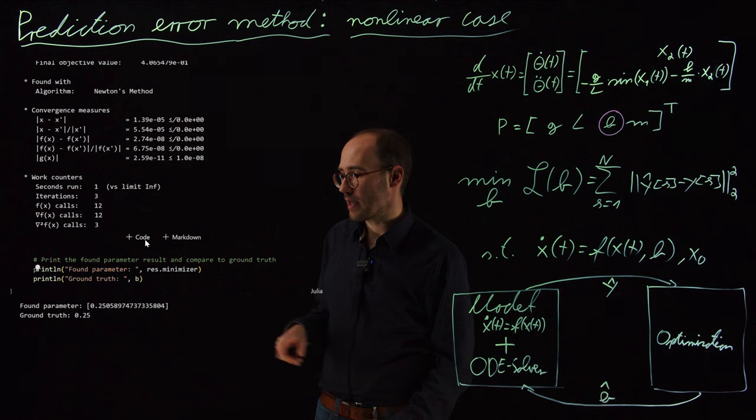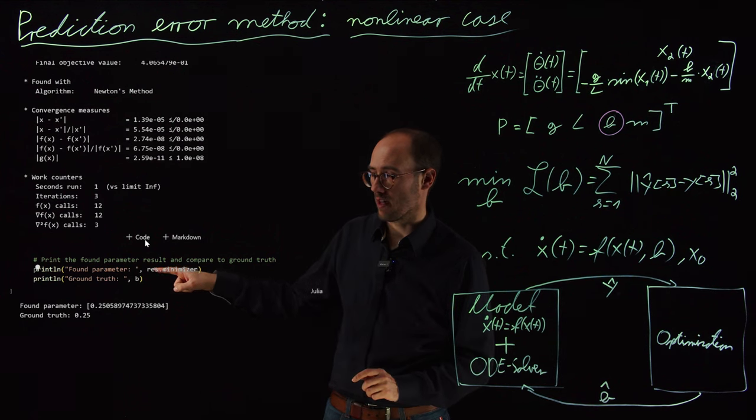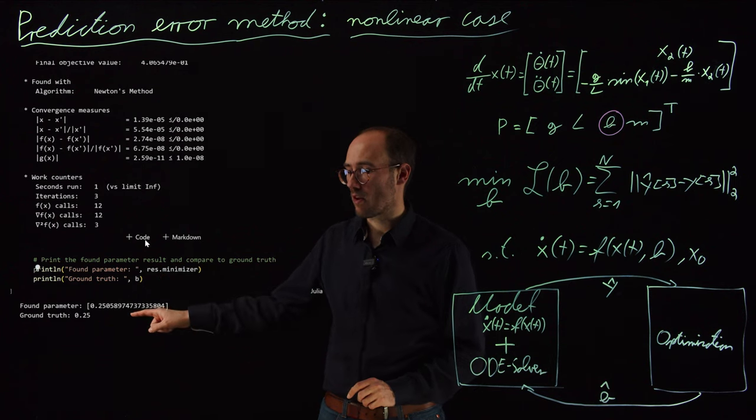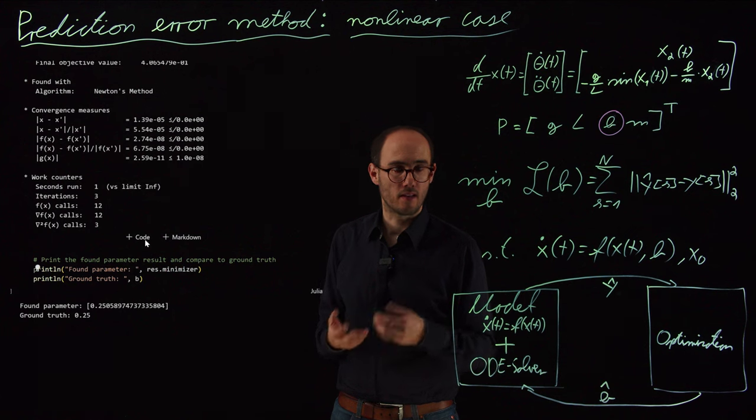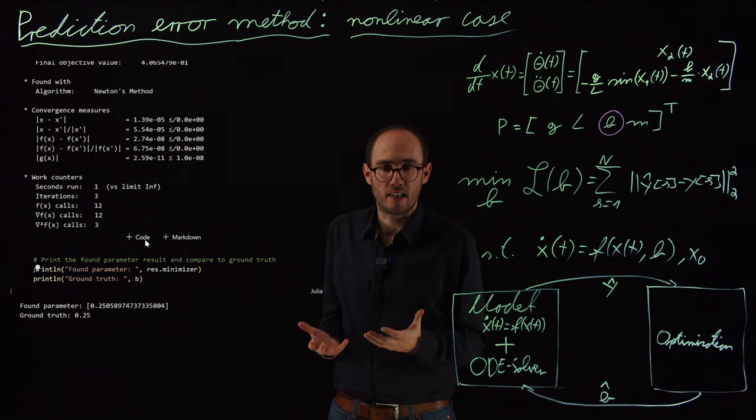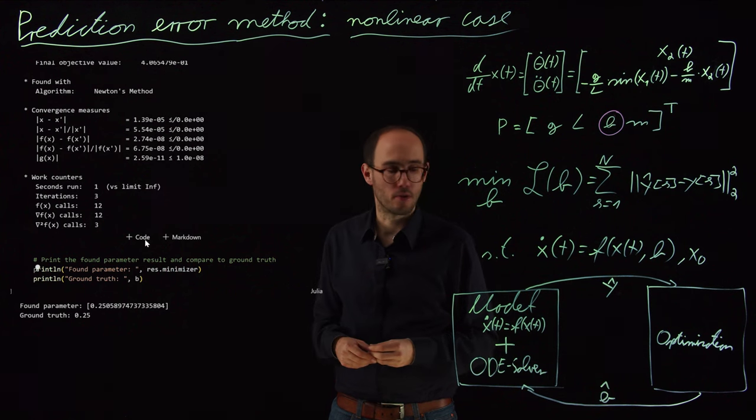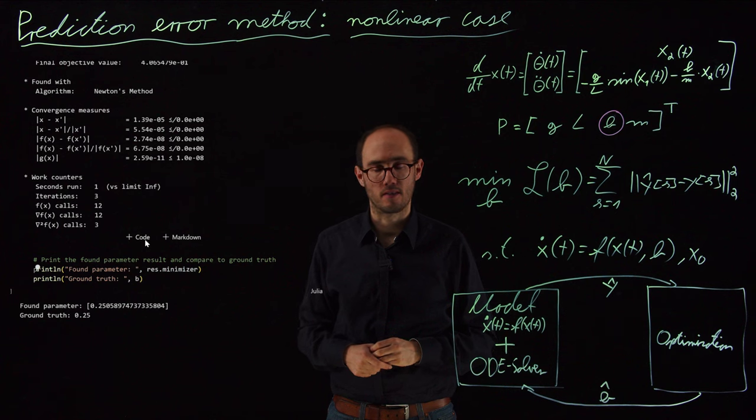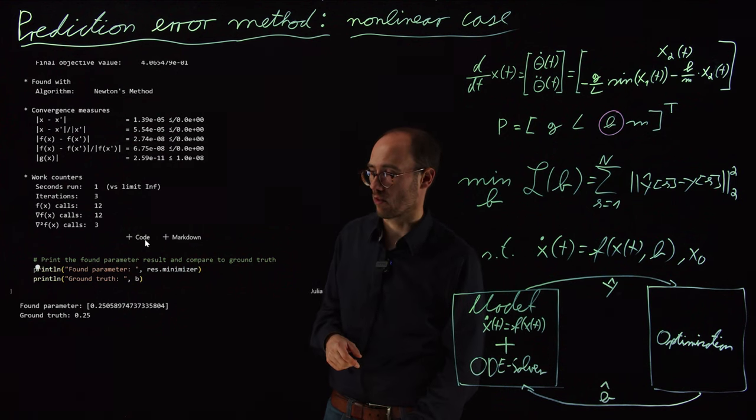If we then compare the found value, so result.minimizer is basically a function call for the optimization solution in terms of B. And when we compare the found parameter B with the ground truth parameter B, we can see that except for some numerical deviations, that is basically the exact value. So the PEM approach also found the correct value here for this friction coefficient in the pendulum example.